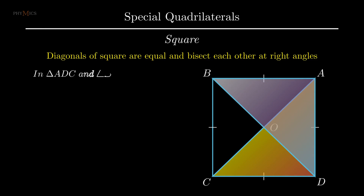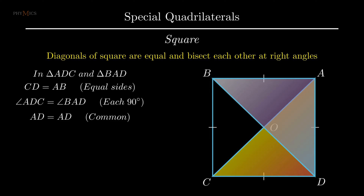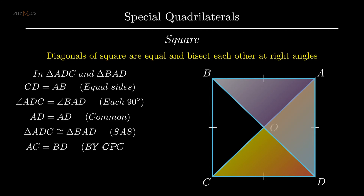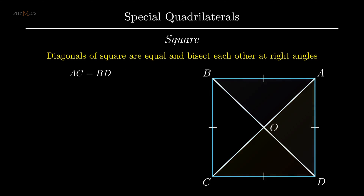Triangle ADC and triangle BAD include diagonal AC and diagonal BD respectively. As all sides of a square are equal, therefore side CD equals side AB, angle ADC equals angle BAD each being 90 degrees, and side AD equals side AD as AD is the common side to both triangles. Therefore by SAS rule, triangle ADC is congruent to triangle BAD. By corresponding parts of congruent triangles, we conclude diagonal AC equals diagonal BD.